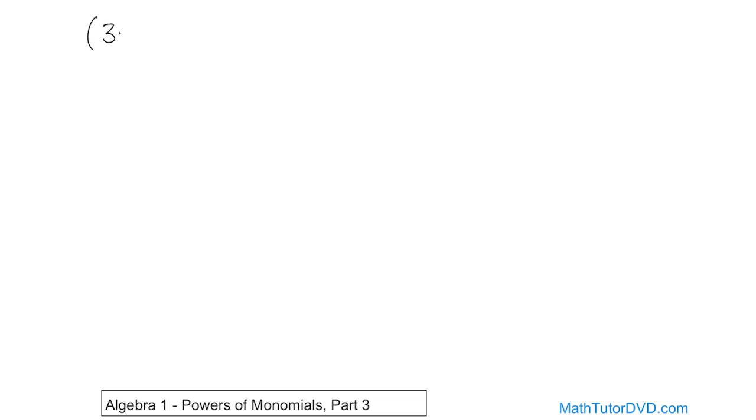If you have, for instance, 3x cubed, and you're raising the whole thing to the power of 2, and then you add to it 2x squared, and raising the entire thing to the power of 3, how do you handle it?